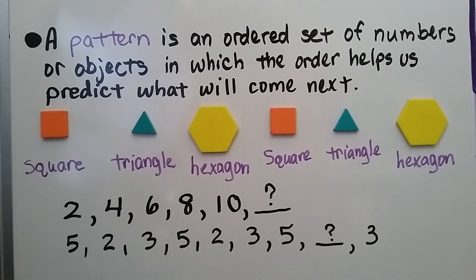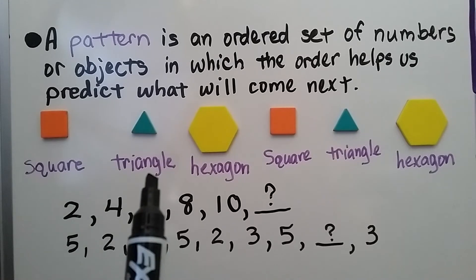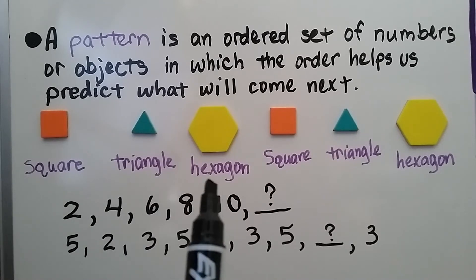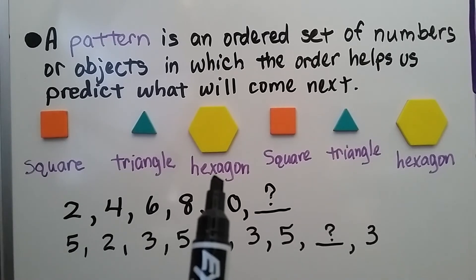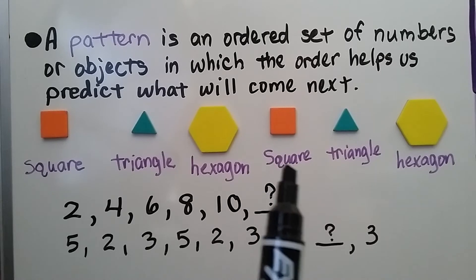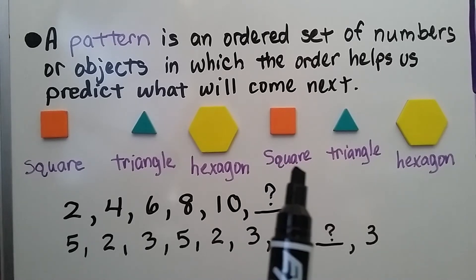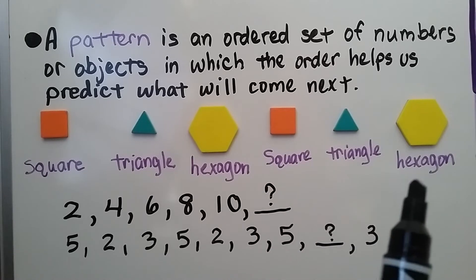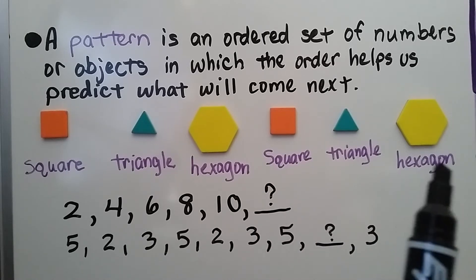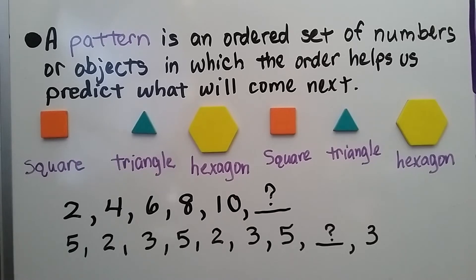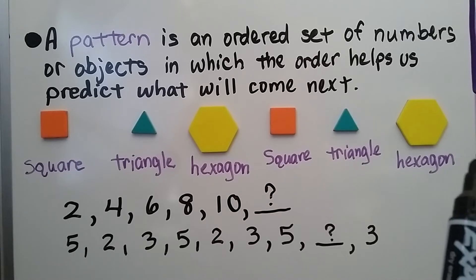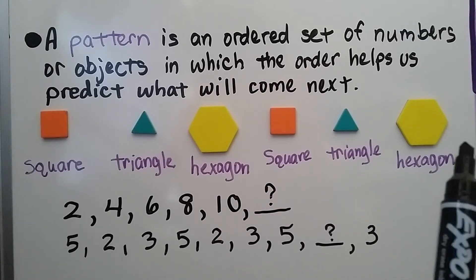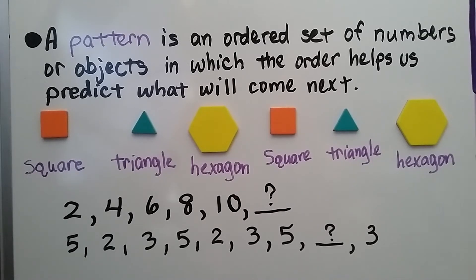We have a pattern here. We have an orange square, a green triangle, a yellow hexagon. Then it repeats: orange square, green triangle, yellow hexagon. And we could continue this pattern on by putting another orange square here, couldn't we? On this side.